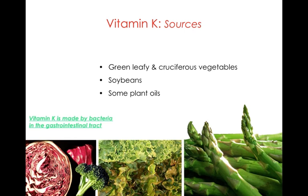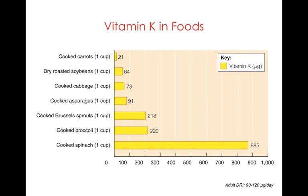Vitamin K is also made by bacteria in our gastrointestinal tract. When infants are born, they're given a shot of vitamin K because their intestinal tract is sterile. It's not until they begin to feed — through nursing or formula — that bacteria are introduced into the intestinal tract and it can begin to make vitamin K. Spinach is also a great source of vitamin K.